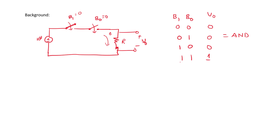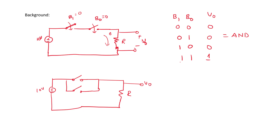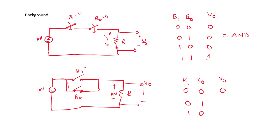Similarly, if the switches are connected in parallel, with B1 and B0 in parallel, when both are 0 both switches are open and V0 is 0. When any one switch is closed — any input is logic 1 — 10 volts is directly applied across resistance R, so V0 is 10 volts, which is logic 1. When both switches are closed, V0 is still 10 volts. This truth table corresponds to an OR gate.